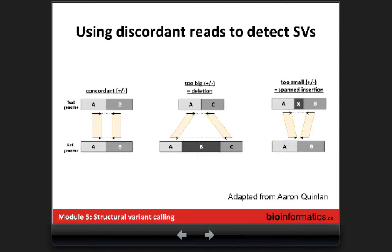When spanning an insertion, you expect to see your insert size be smaller, because there is a fragment in your test genome that is not in the reference, so the reads collapse together. You can clearly see the limitation here: if your insertion is too large, then you will not be able to have reads that span over the insertion, and you won't detect it. This is why having longer reads or mate-pairs can be advantageous.